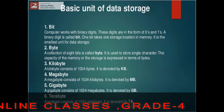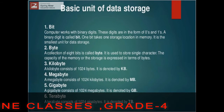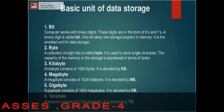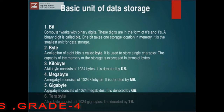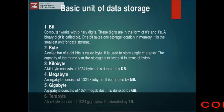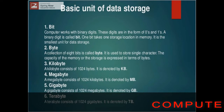Binary language is understood by the computer in the form of 0 and 1. One kilobyte is equal to 1024 bytes. One megabyte is equal to 1024 kilobytes. One gigabyte is equal to 1024 megabytes. One terabyte is equal to 1024 gigabytes. One petabyte is equal to 1024 terabytes.